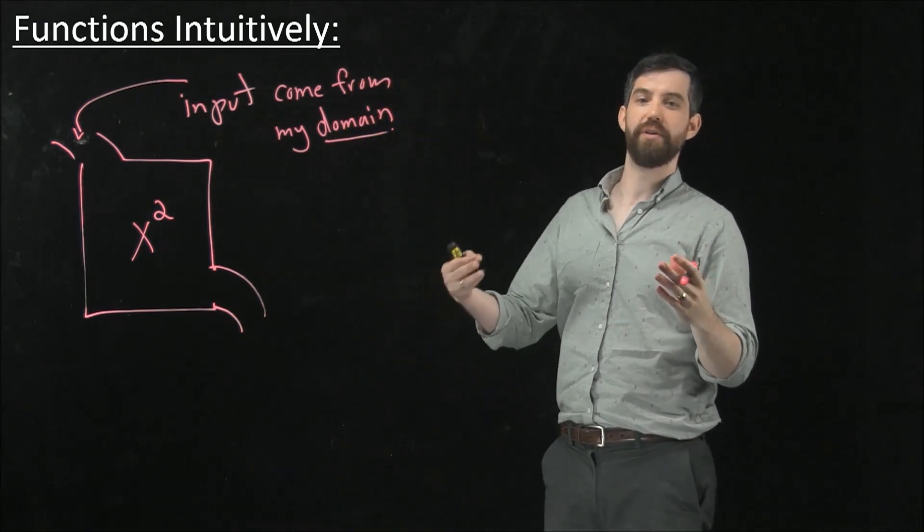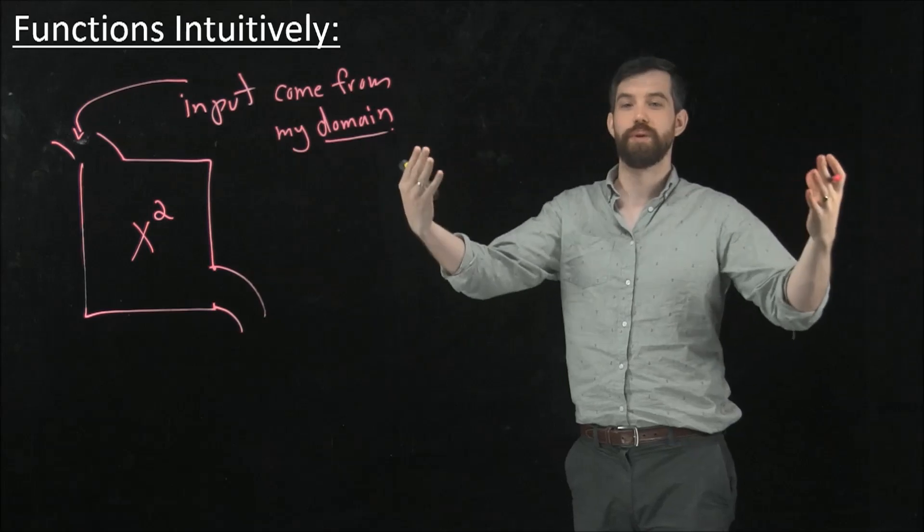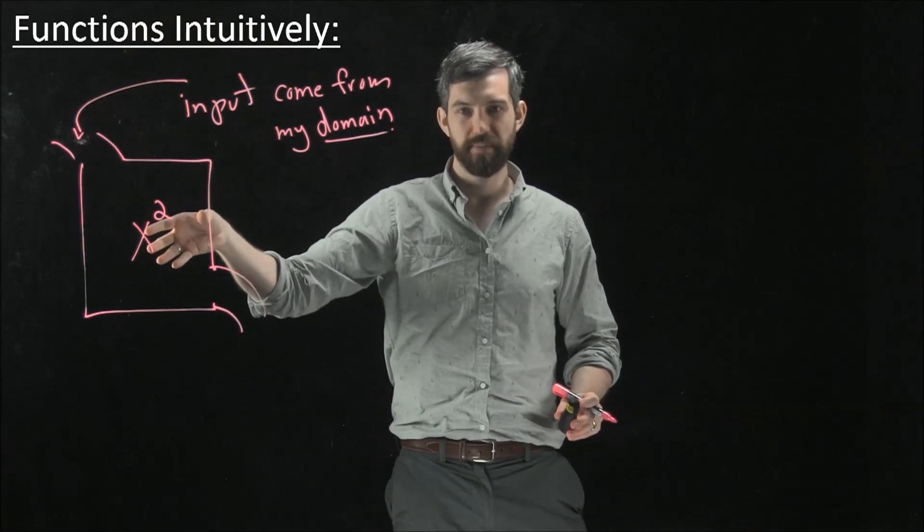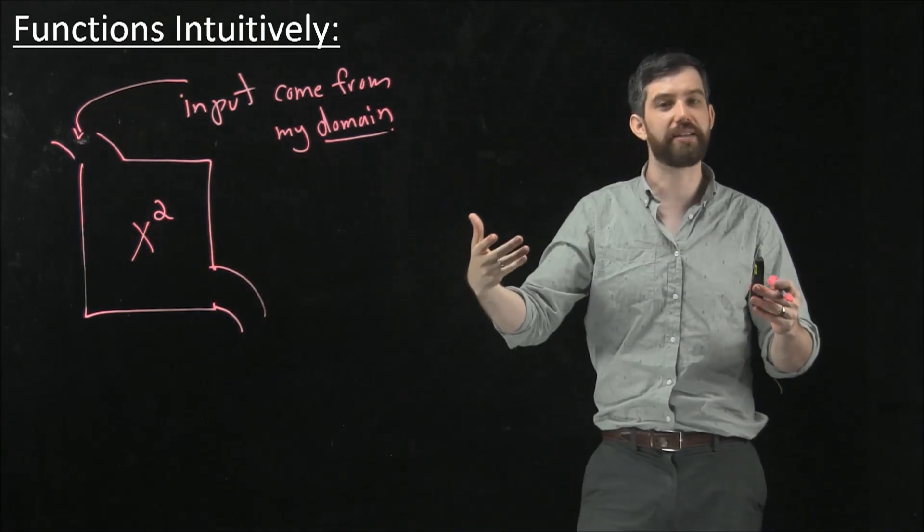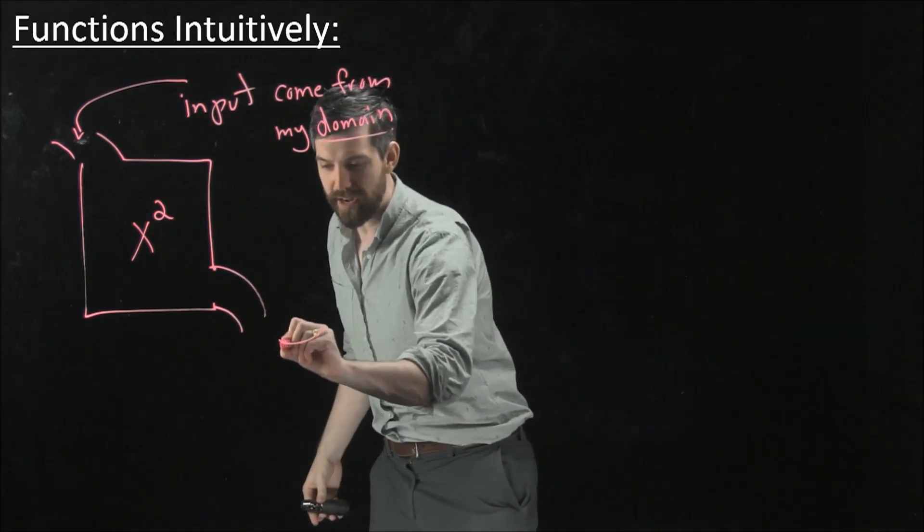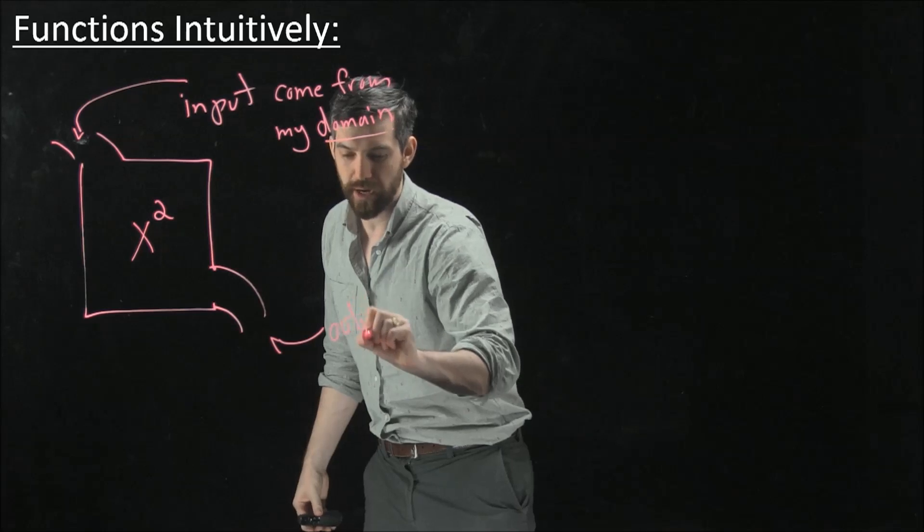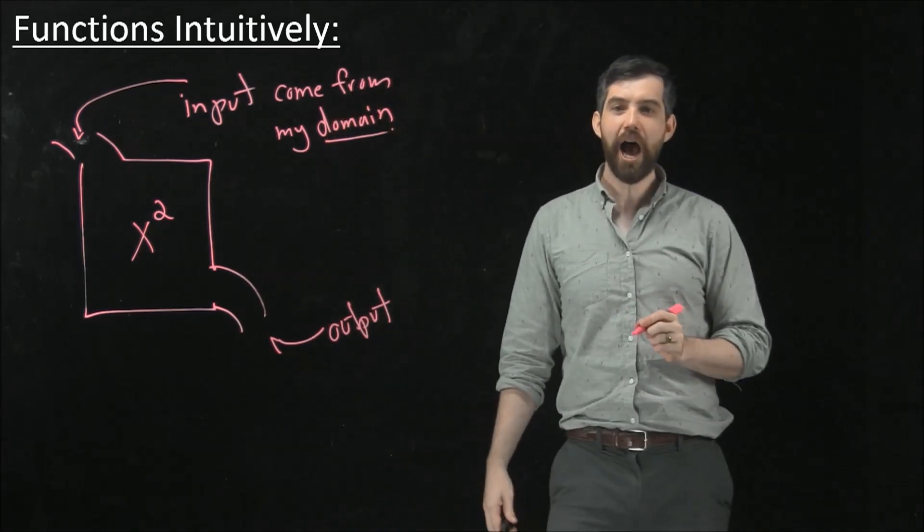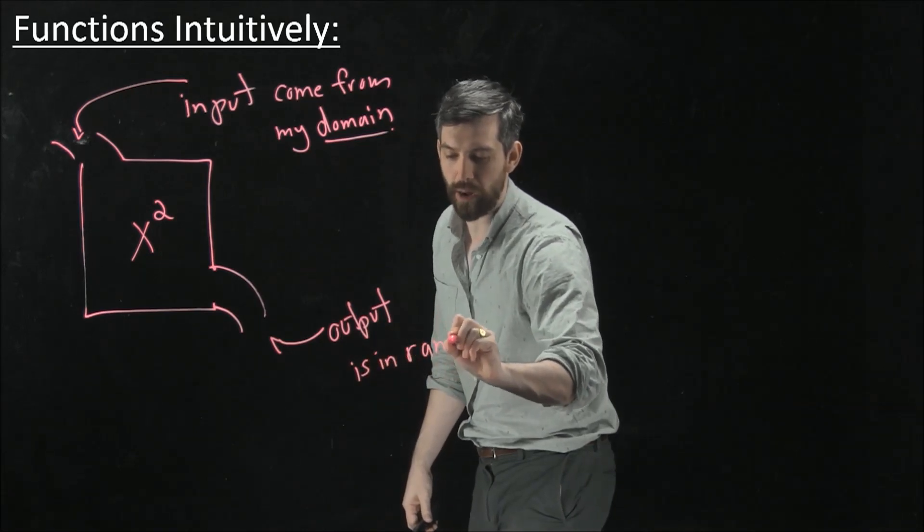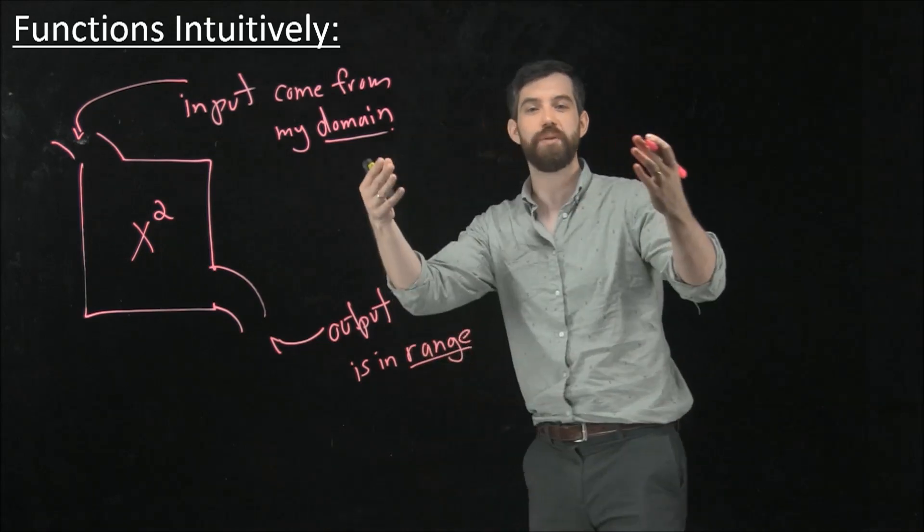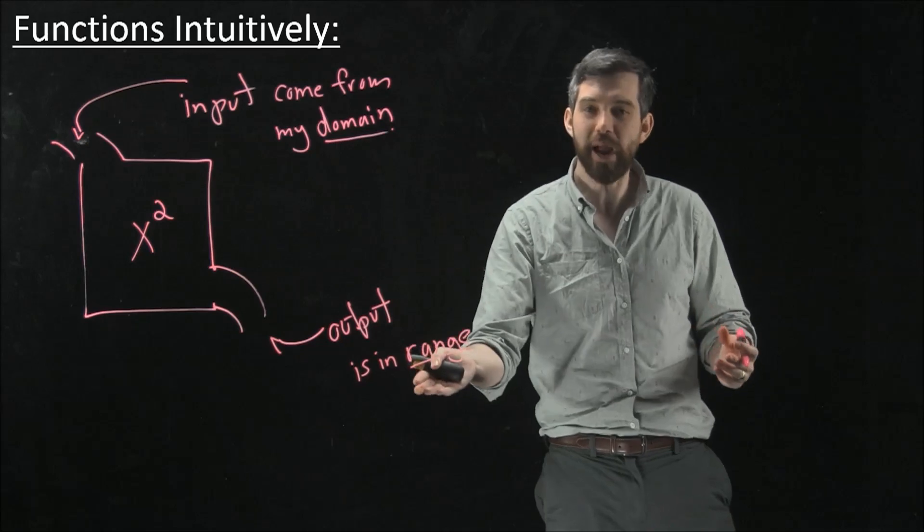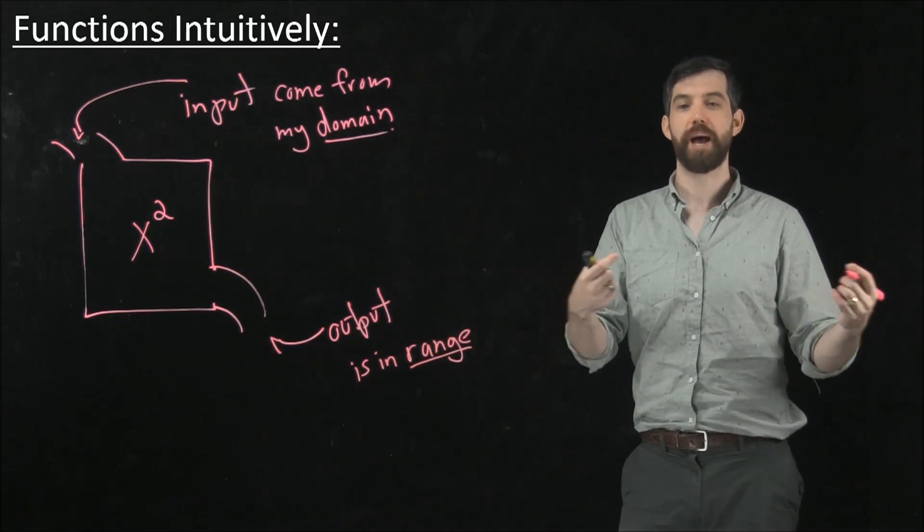Domain is just my name for the set of all of the possible inputs. So this number comes in like say the number 2. It goes into the machine. The machine squares it. The square of 2 is 4. So it takes that 2 and it spits out a 4. And then out of it comes the output. And the output is going to live in a different math word. We're going to call it the range. So the domain is going to be the input values or the set of possible inputs. And the range is going to be the set of possible outputs.